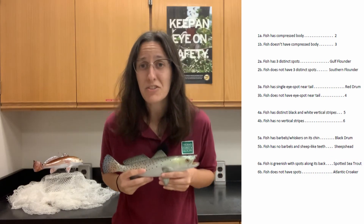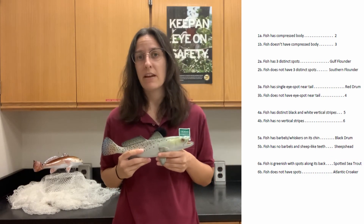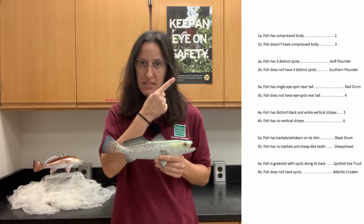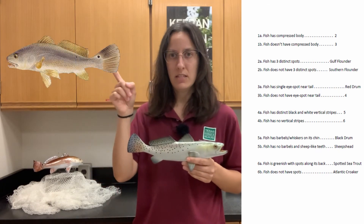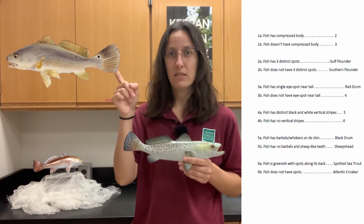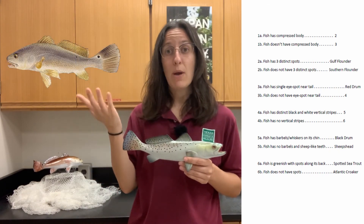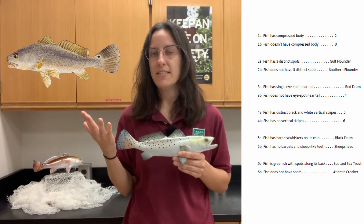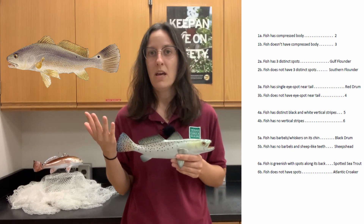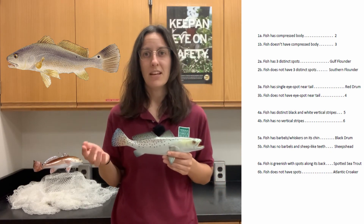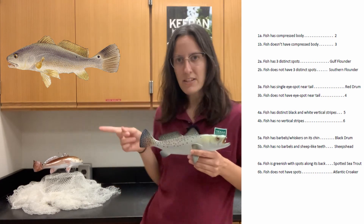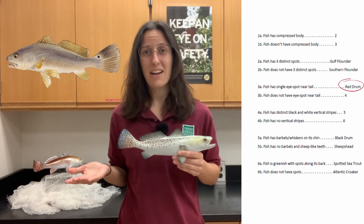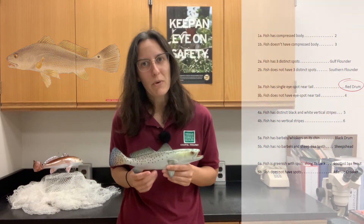If you want extra practice using a dichotomous key to identify fish species, use the key on the screen to identify this fish species. If you haven't had time to figure it out yet and you still want to, go ahead and pause the video now because I'm about to reveal the answer. This fish here and this one here — they're both red drum. Is that the answer you got? I hope it was.